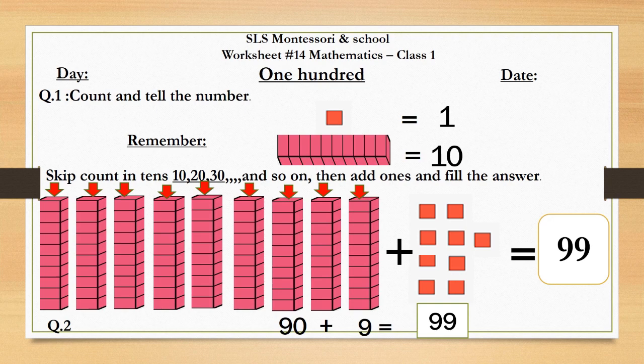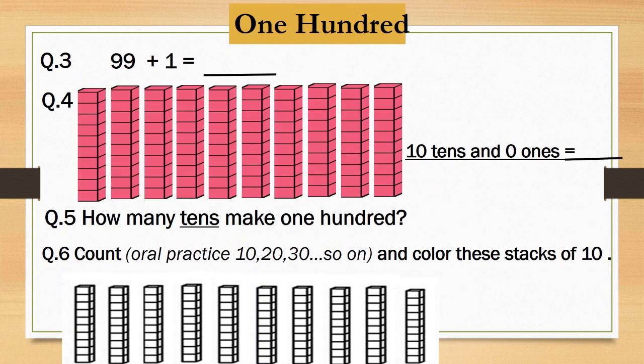And 99 is the largest 2 digit number. Now, we will do question number 3. In this question, we have to add 99 and 1. Do you remember? 99 plus 1 more is? 100. Very good.